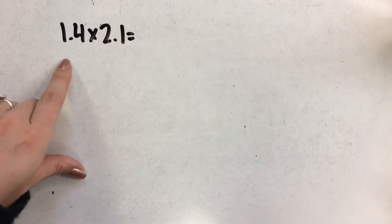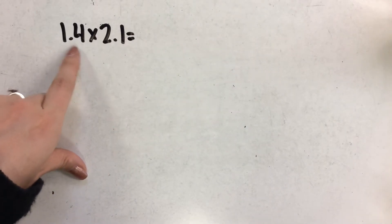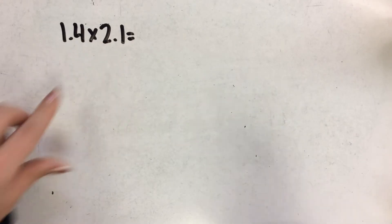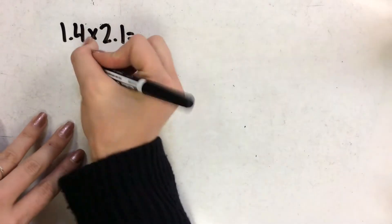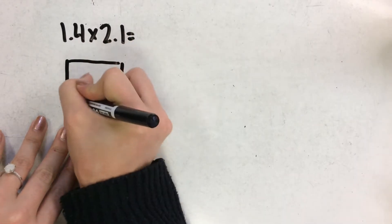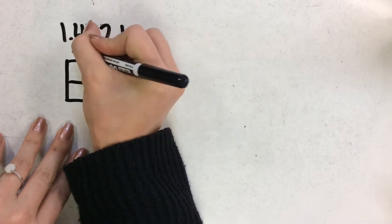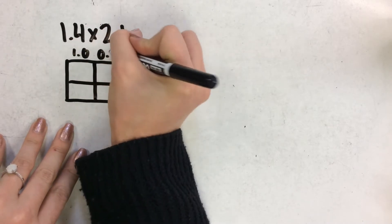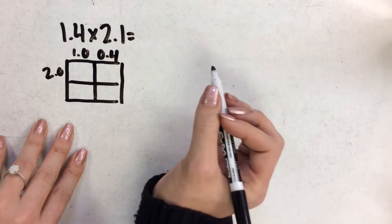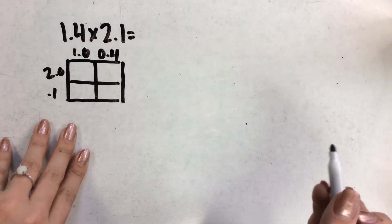We can also use base ten blocks to multiply these numbers — one and four tenths times two and one tenth — like an area model. So kind of like we're splitting it up into a two by two rectangle with one whole and four tenths, and then two wholes and one tenth.